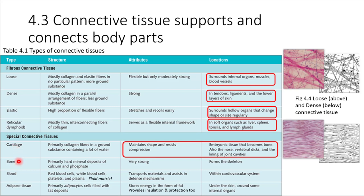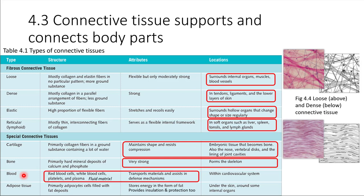That leads us to the next type of special connective tissue: bone. Bone is considered a connective tissue. The structure of bone is special in that the matrix around the cells has been hardened with hard mineral deposits, making bone very strong — this forms our skeleton in a full-grown adult. Blood is also considered a type of connective tissue. The very unusual thing about blood as a connective tissue is that the matrix is fluid — mostly water with many things dissolved in it — and the cells, red blood cells and white blood cells, float in that liquid matrix.